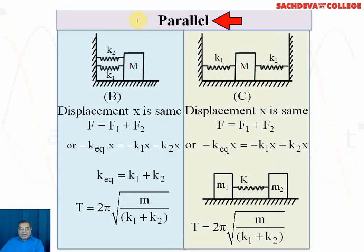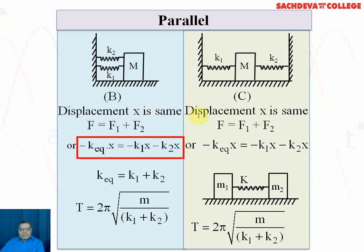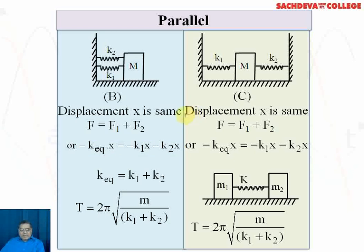For the parallel combinations, two figures are shown — Figure B and Figure C. In Figure B, the two springs are arranged in parallel, so when the mass moves, the displacement x is the same for both springs. The forces are −k1·x and −k2·x respectively. Cancelling x from both sides, we get the net spring constant equation.